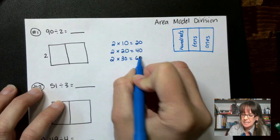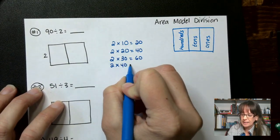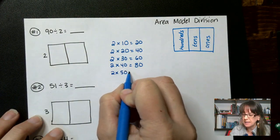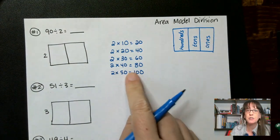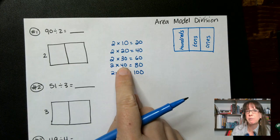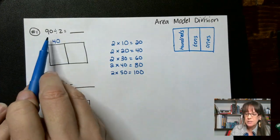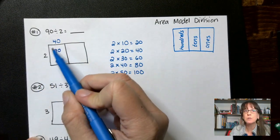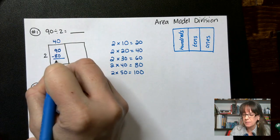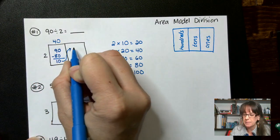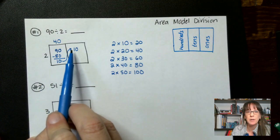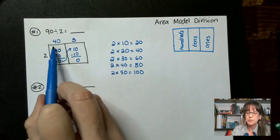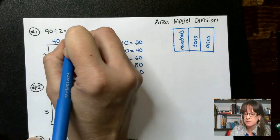2 times 30 is 60. 2 times 40 is 80. We're trying to get up to 90 without going over. If I go 2 times 50, that gives me 100 — that's too much. So we've got to go with 40 here. We're going to start with 90 and subtract everything we find along the way. 2 times 40 is 80, so we subtract that and get 10. Now how many times does 2 go into 10? 5 times — 5 times 2 is 10. We subtract it and get no remainder. So 40 plus 5 gives us 45.